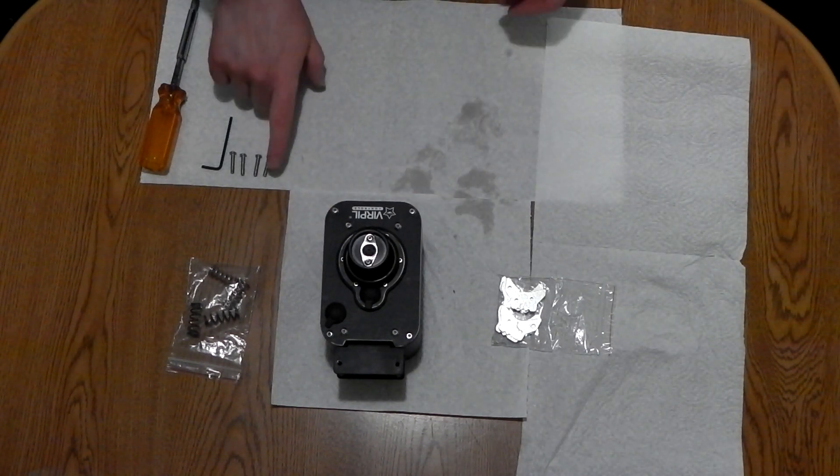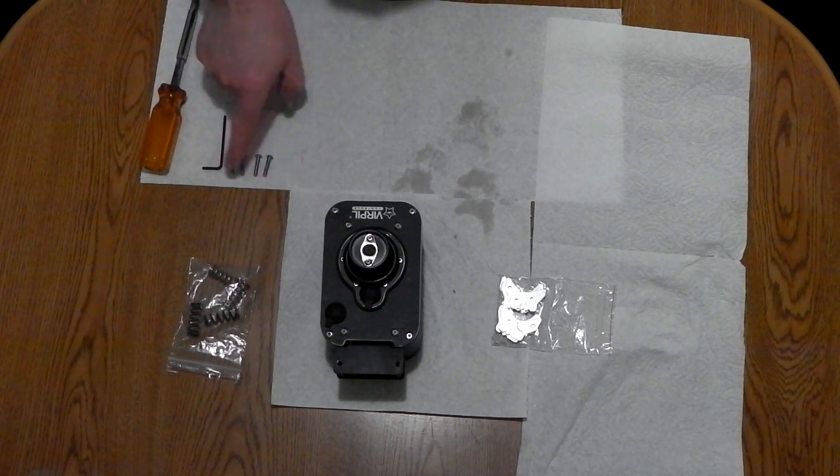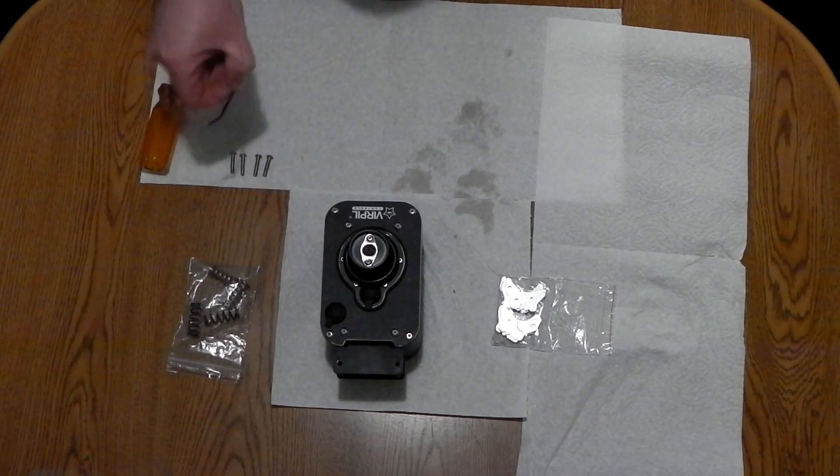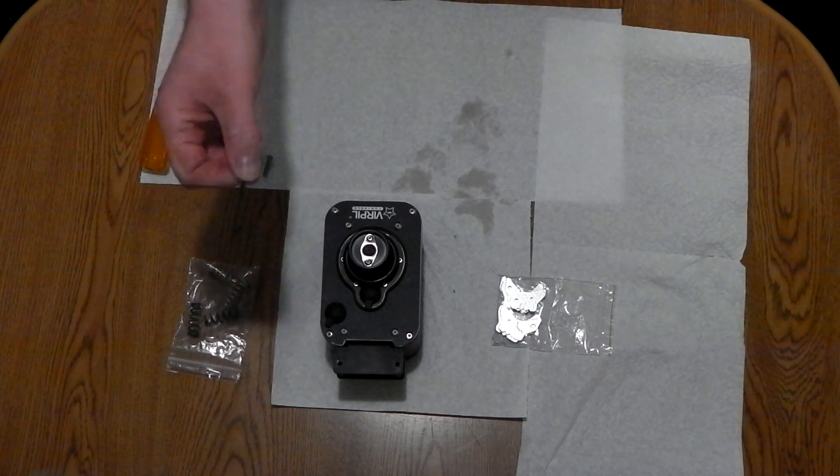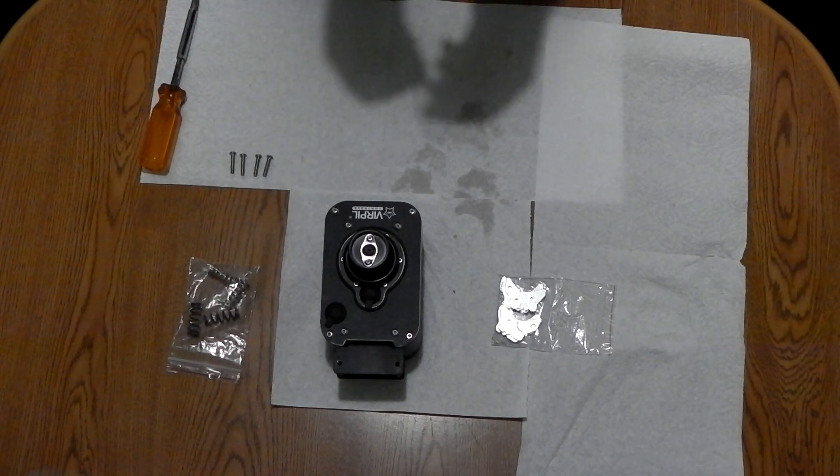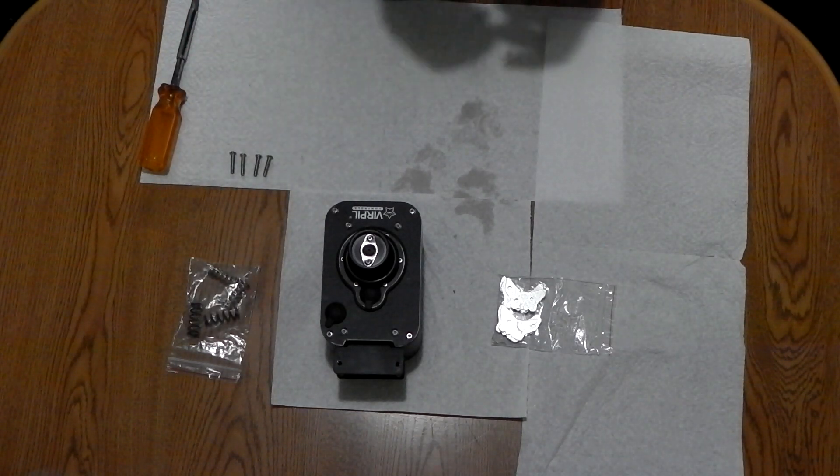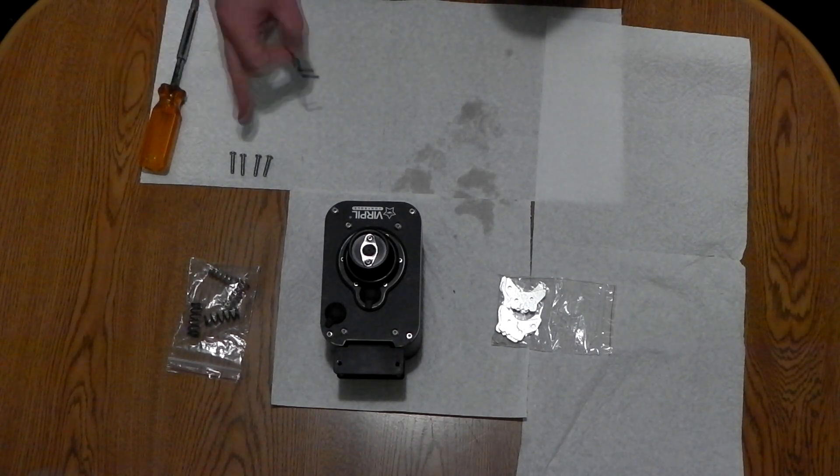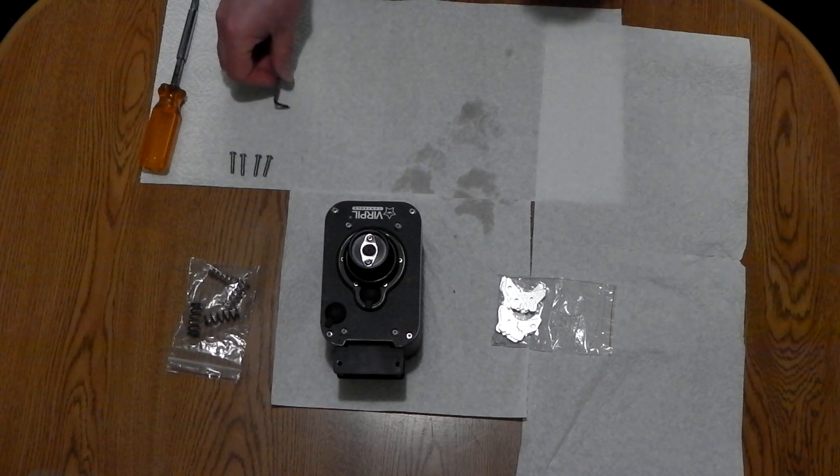First thing you have to do is remove the four screws that are in the base, which I've done already because there's no point showing you me unscrewing stuff. To do that you're going to need a 2.5mm hex or allen key, and you'll be using this for removing the base screws and also removing the cams.